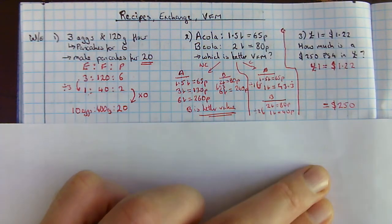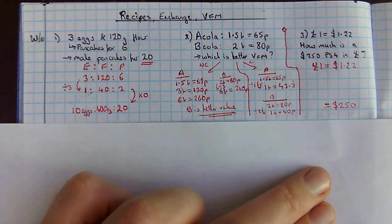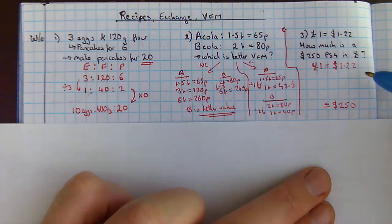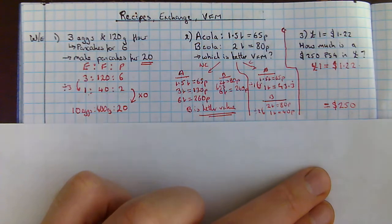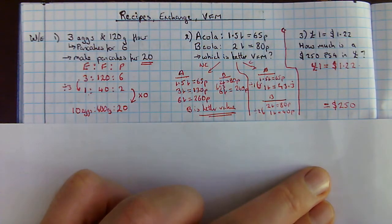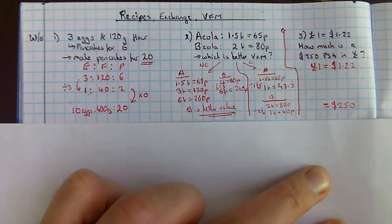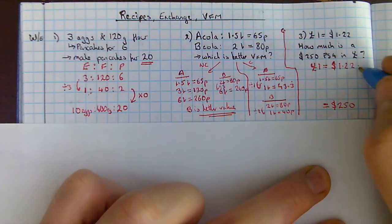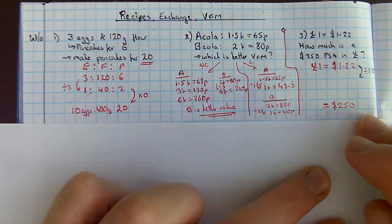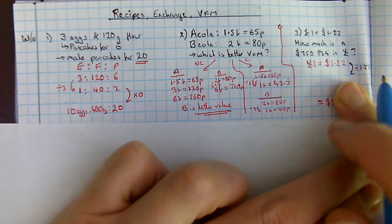Well, the way to do that is to use my unitary ratio first. If I want to go from 1.22 to 250, I need to go via 1. So, here, I'm going to divide by 1.22. And that's going to tell me, when I do 1.22 divided by 1.22 is obviously 1.